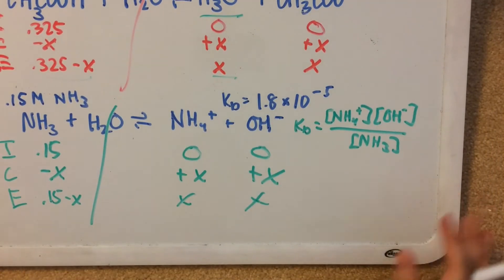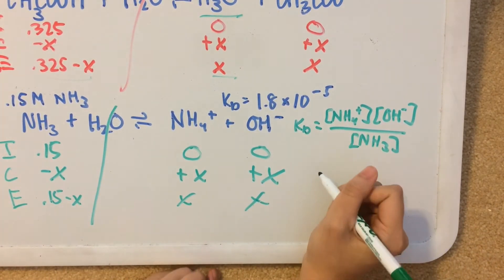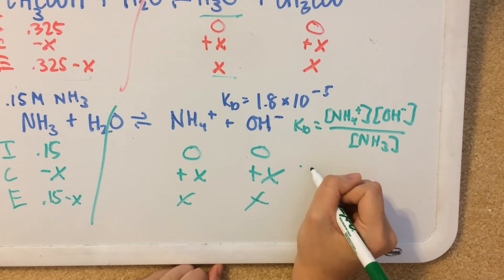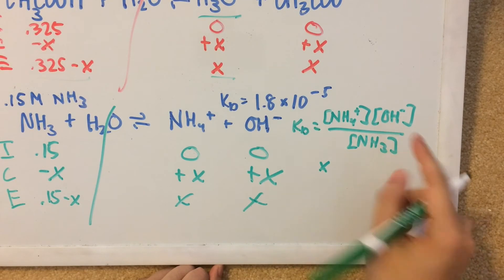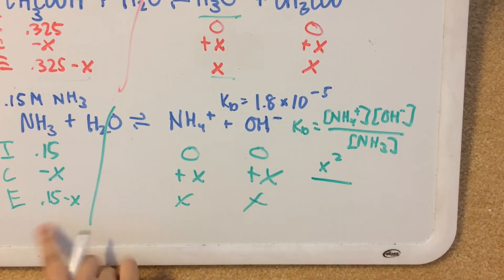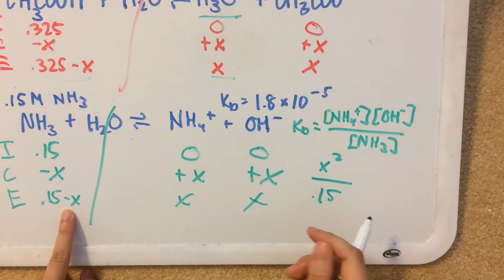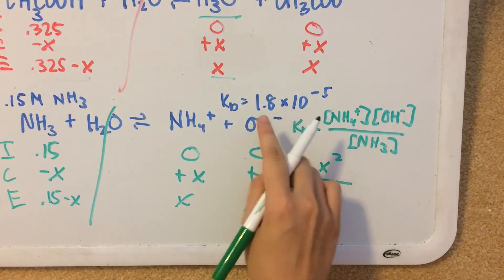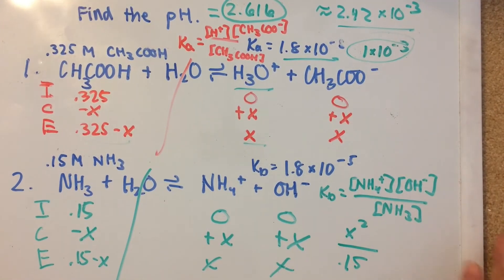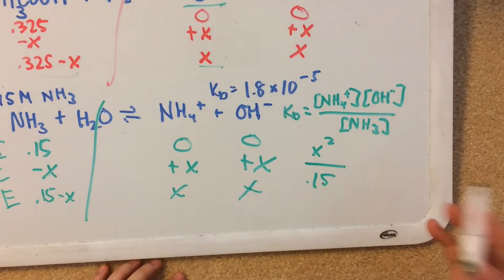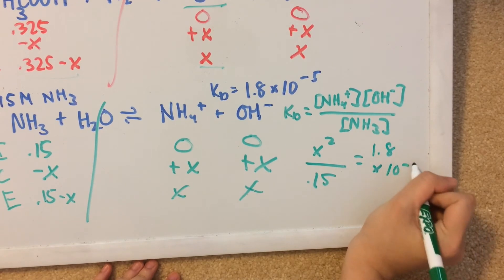Now what we do is the same thing. We have x for the concentration of NH4 plus. And we're going to multiply that by x. So that will be x squared. And then over 0.15. And we don't have to put in the minus x because KB is less than 1 times 10 to the negative third. That was our shortcut from before. So we'll set that equal to 1.8 times 10 to the negative fifth.